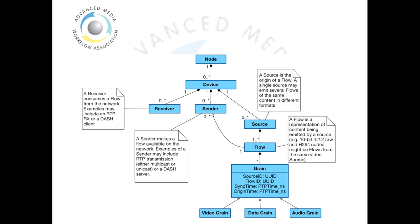Each source may have multiple flows associated with it — so for example, for video there may be a raw video flow or multiple coded video flows. Each flow then consists of a number of grains. Each grain contains some intimate metadata, which identifies which source it came from, which flow it is part of, and a number of timestamps. These timestamps track the origination time for that grain within the flow and a sync timestamp used for synchronization through a number of devices in a network system.